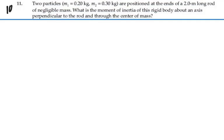Here's problem 10-11. Two particles, mass 1 is 0.2 kilograms, mass 2 is 0.3 kilograms, are positioned at the ends of a 2 meter long rod of negligible mass. What is the moment of inertia of this rigid body about an axis perpendicular to the rod and through the center of mass?